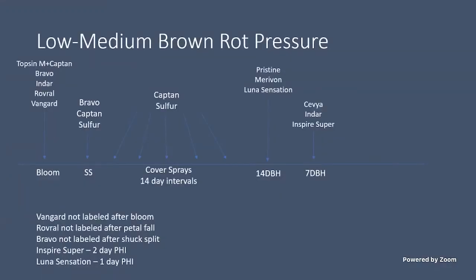This is a season-long look at what your spray program could be — for low to medium brown rot pressure. We want to start sprays during bloom. You can swap products around; just because I have something listed at bloom doesn't mean you can't spray it later in the season, as long as it's not one of the restricted products. Vanguard is not labeled after bloom, Rovral is not labeled after petal fall, and Bravo is not labeled after shuck split.